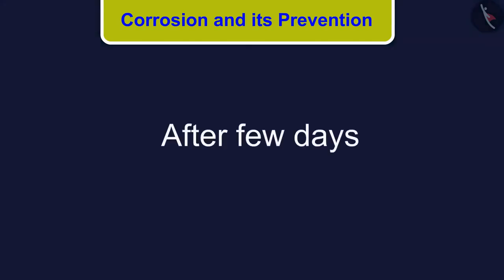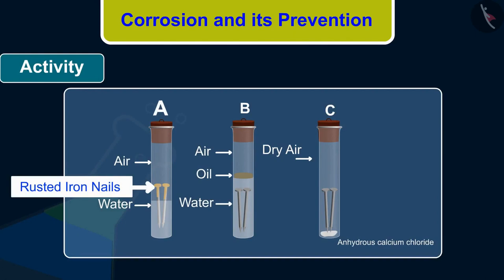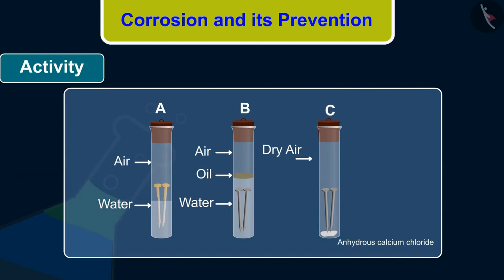Leave these test tubes for a few days and then observe. You will observe that iron nails rust in test tube A, but they do not rust in test tubes B and C. In test tube A, the nails are exposed to both air and water. In test tube B, the nails are exposed to only water. And the nails in test tube C are exposed to dry air.